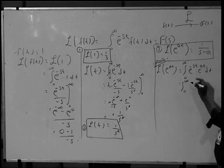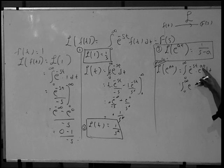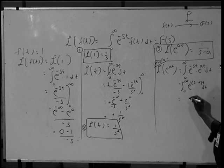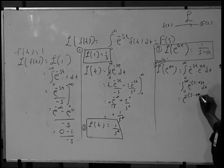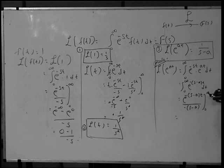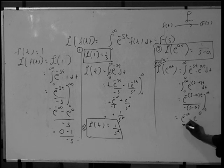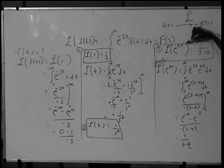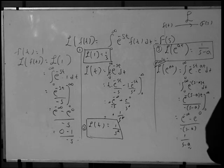By applying laws of exponents, we can write this as e raised to minus (s minus a) into t dt. Integrating with respect to t gives e raised to minus (s minus a)t divided by minus (s minus a), with limit from 0 to infinity. Substituting the upper limit gives e raised to minus infinity, and the lower limit gives e raised to 0, divided by minus (s minus a). Since e raised to minus infinity is 0 and e raised to 0 is 1, we get 1 divided by (s minus a). So Laplace transform of e raised to at is 1/(s minus a).